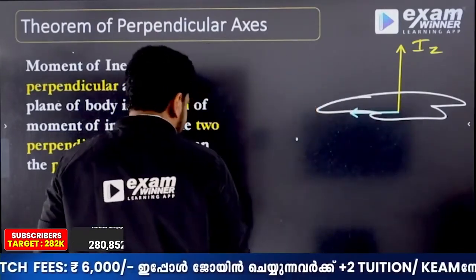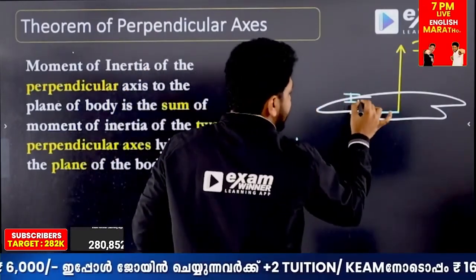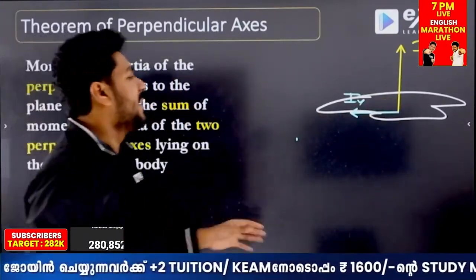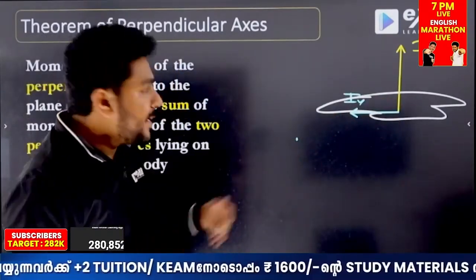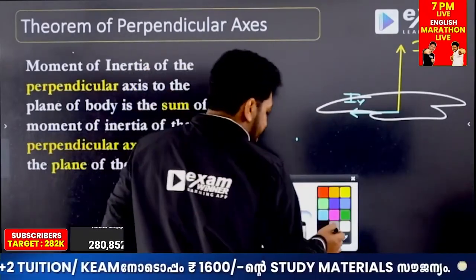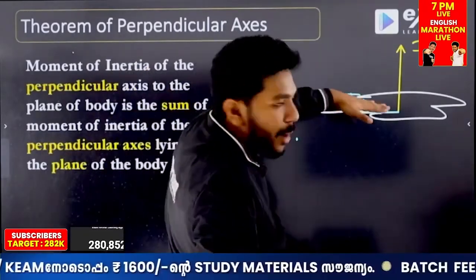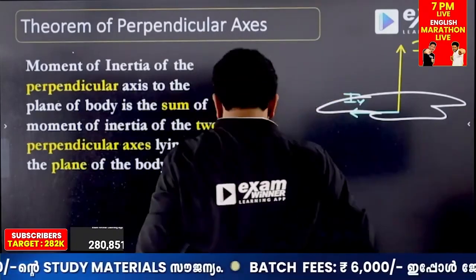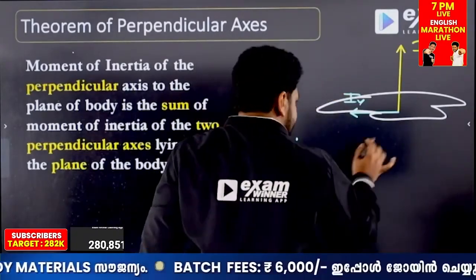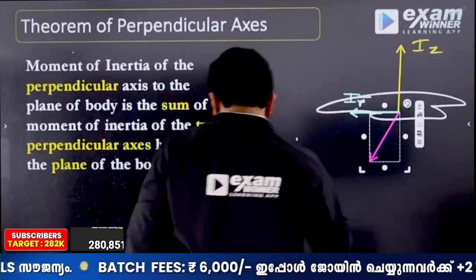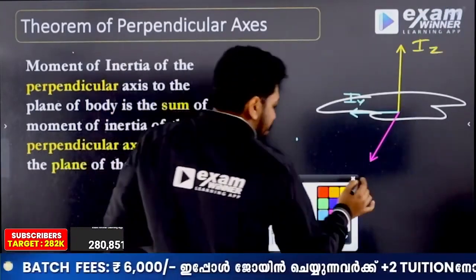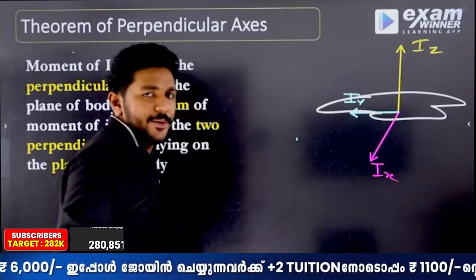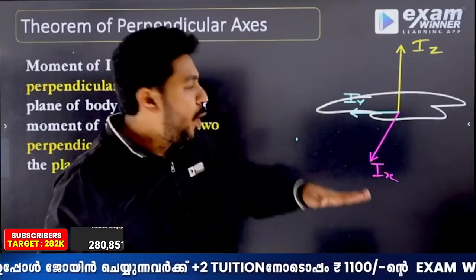Now, I am going to place the y-axis. The y-axis starts in the same plane. I have one axis — what we call Iy — for the body in the plane. Here is the important thing: the axis, the one that lies in the plane.